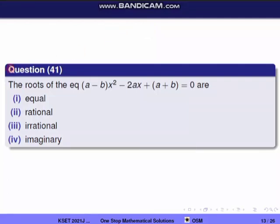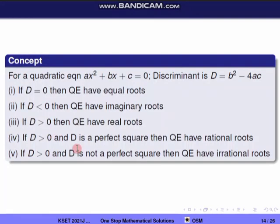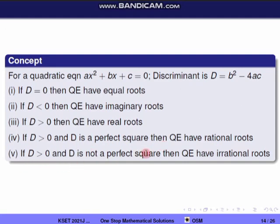Next question, question 41. The roots of the equation (a minus b)x² minus 2ax plus (a plus b) equal to 0. The discriminant D of a quadratic ax² plus bx plus c is b² minus 4ac. If D equals 0: equal roots. If D less than 0: imaginary roots. If D greater than 0: real roots. If D greater than 0 and a perfect square: rational roots. If D greater than 0 and not a perfect square: irrational roots.